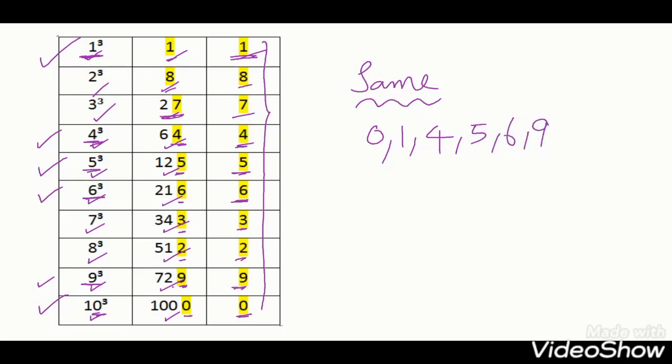If you have this digit, these 6 digits, definitely these will ends with same digit. Suppose 21 cube, 21 cube always ends with 1. 44 cube always ends with 4. Like that. So 0, 1, 4, 5, 6, 9 coming means same digit will end.